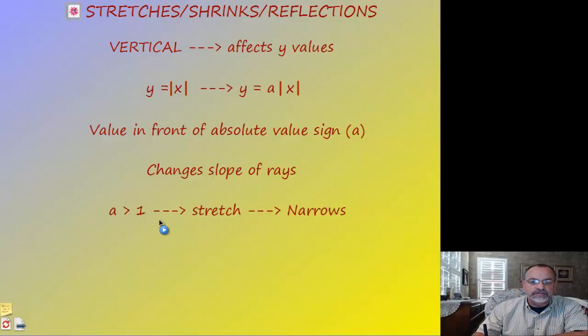The slope of the rays is now this 'a' on the outside of the absolute value sign. If 'a' is bigger than one, that's a stretch, which actually narrows the V. Think of a V shape — if you pull it upward, the sides come together. Even though the number is bigger, it narrows the V because that number is the slope, and the slope gets steeper and steeper.